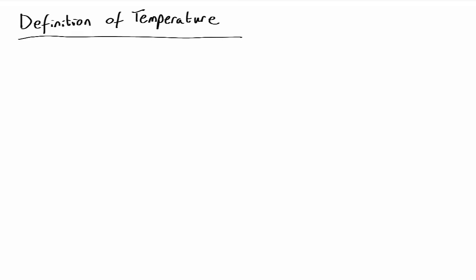Temperature tells us how much the atoms in some substance are jiggling around at random. But how can we actually put a number to it?